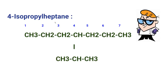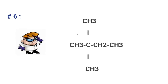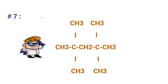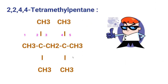Here is the next compound — again a very easy one. Think about the name and write down your answer. The name of this compound is 2,2-dimethylbutane: the longest chain consists of four carbons making it butane, and two methyl groups are located on the second carbon.